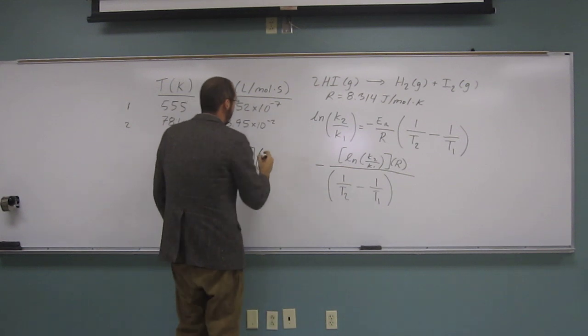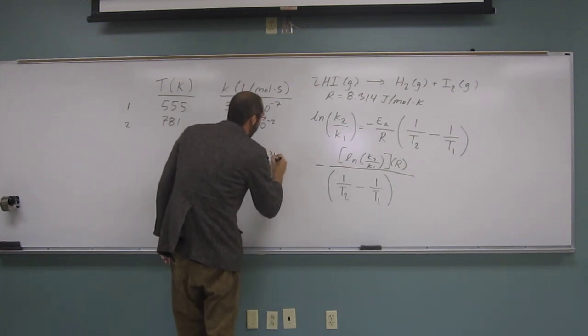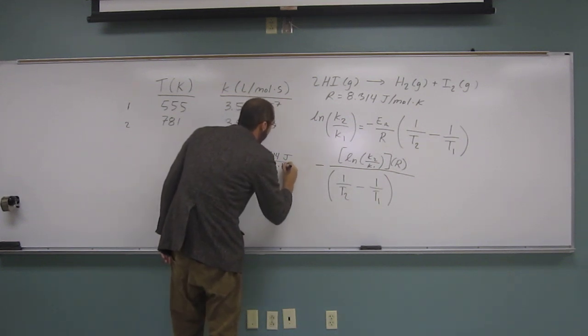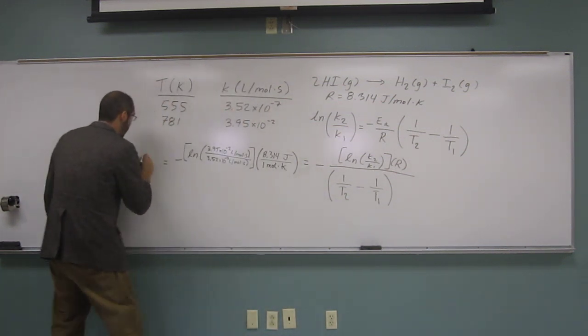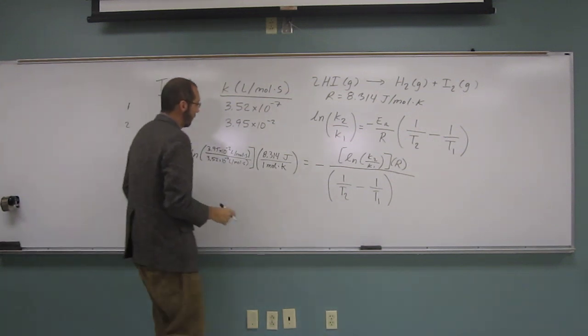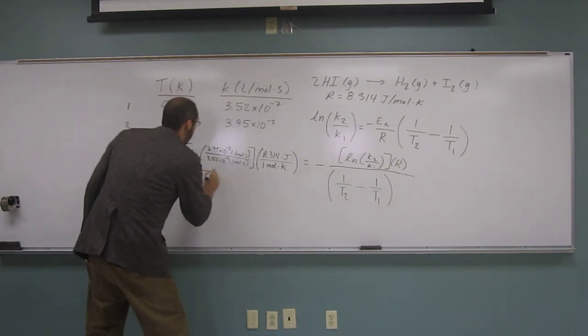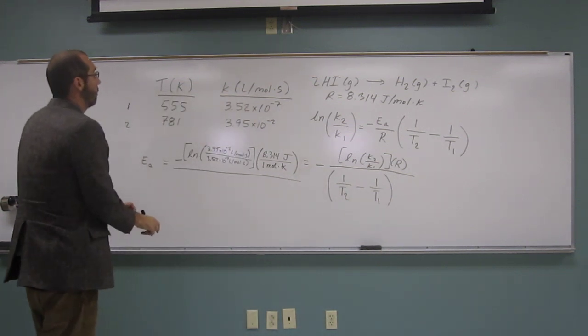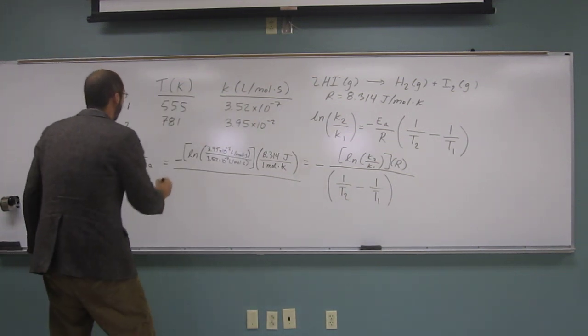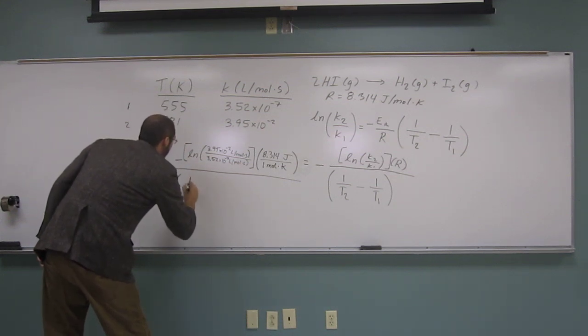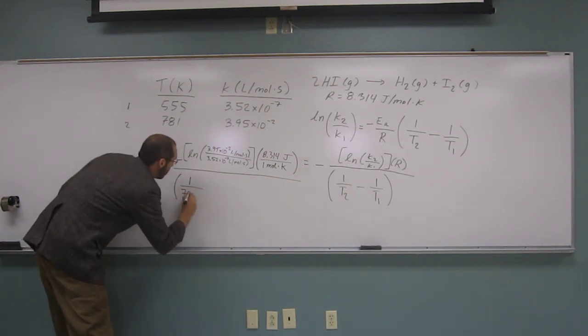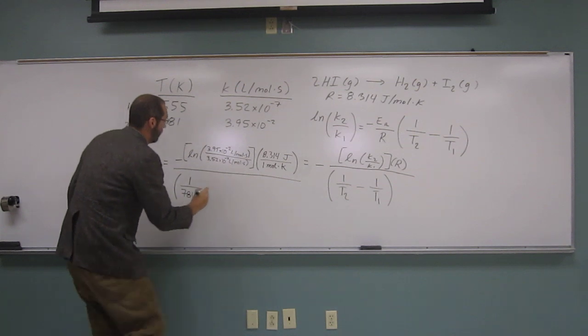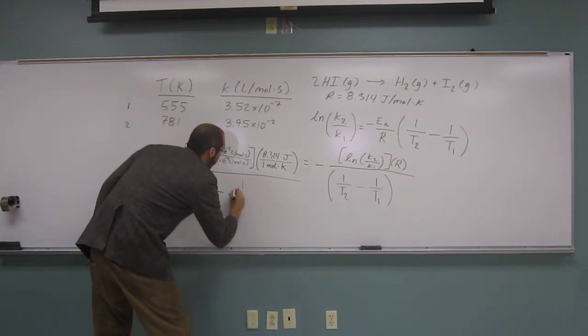So, I like to write out this kind of expanded form. Joules, per mole Kelvin. 1 over T1, 555 Kelvin minus 1 over T2, 781 Kelvin.